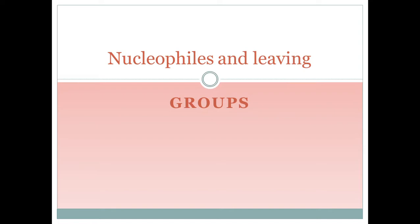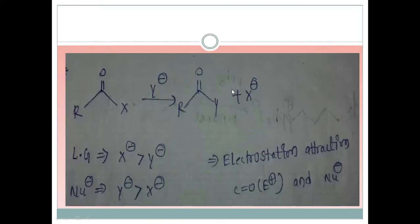Hello friends, I hope everyone is fine. I have already made three videos on nucleophilic substitution reactions, so I thought we need clarity about nucleophiles and leaving groups. Obviously, nucleophiles have a lone pair of electrons, and the leaving group — the outgoing group — also leaves with a negative charge. We need to know the conditions required to make a better nucleophile and a better leaving group.